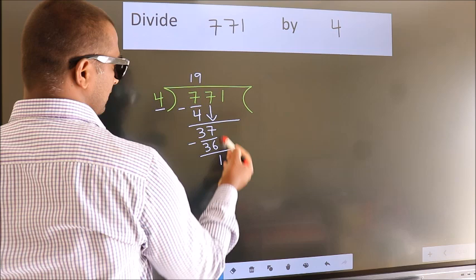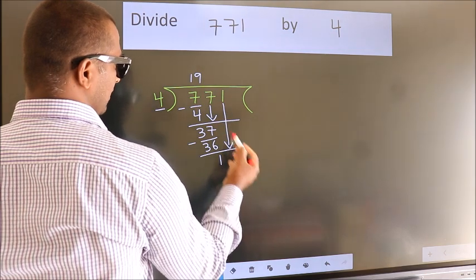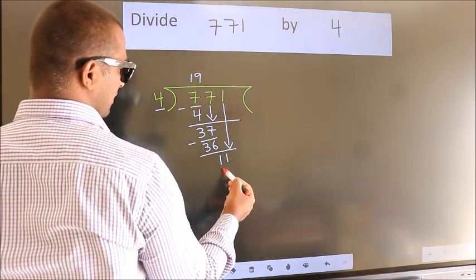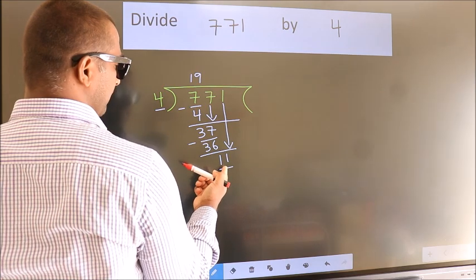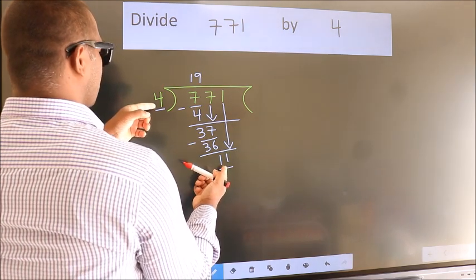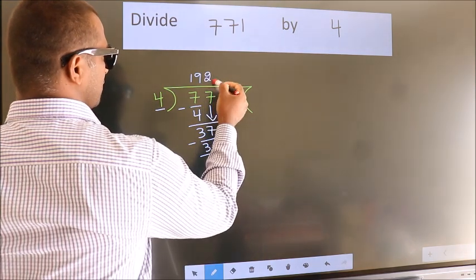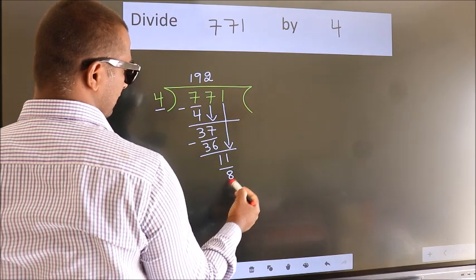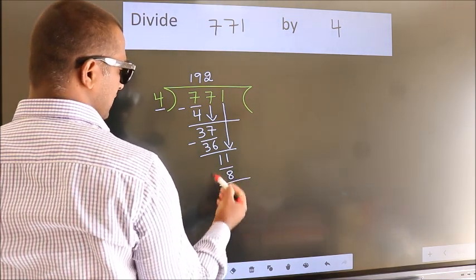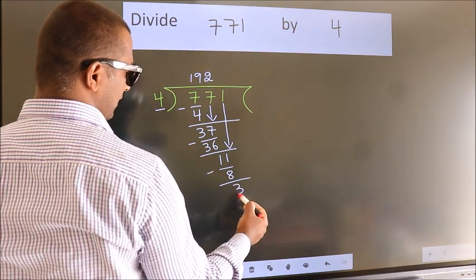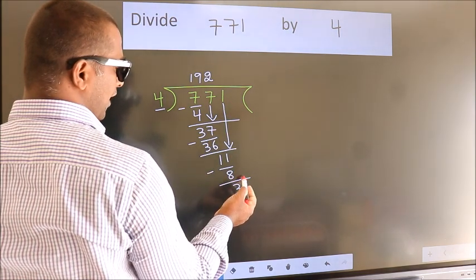After this, bring down the next digit, 1, so 11. A number close to 11 in the four table is 4 twos, 8. Now we subtract and get 3. No more numbers to bring down.